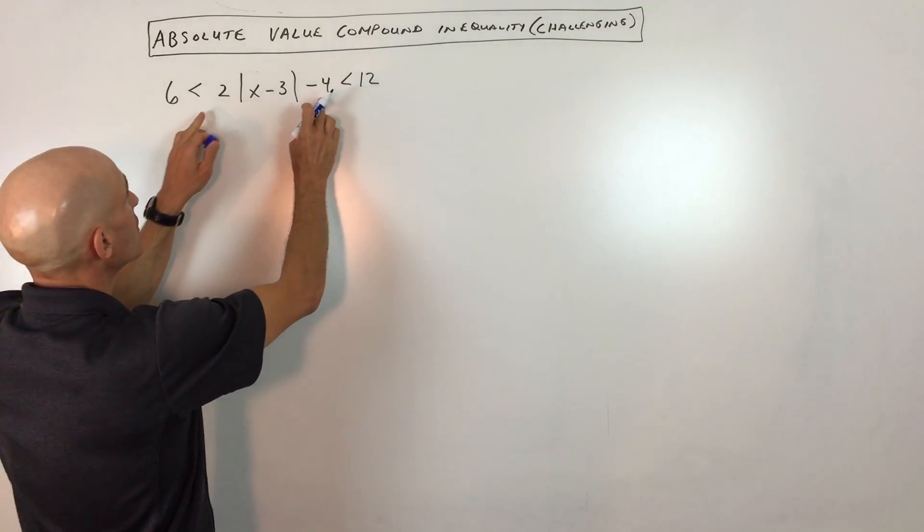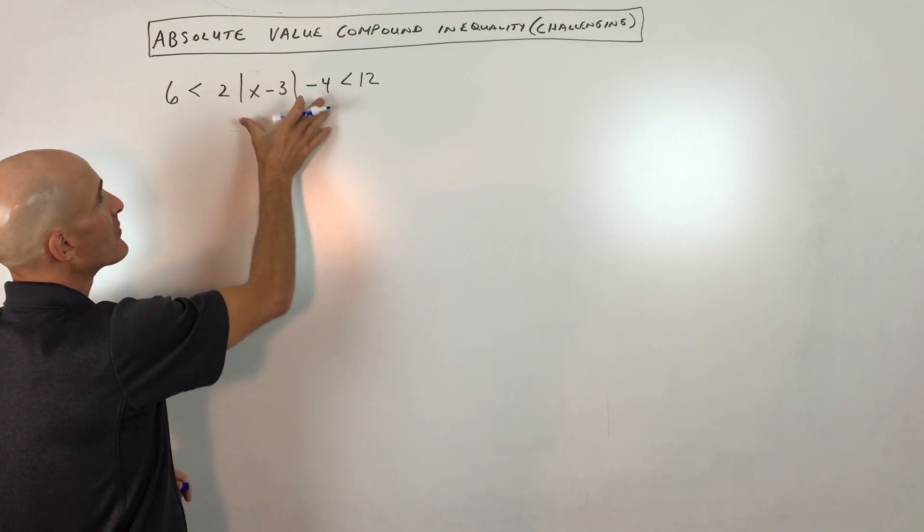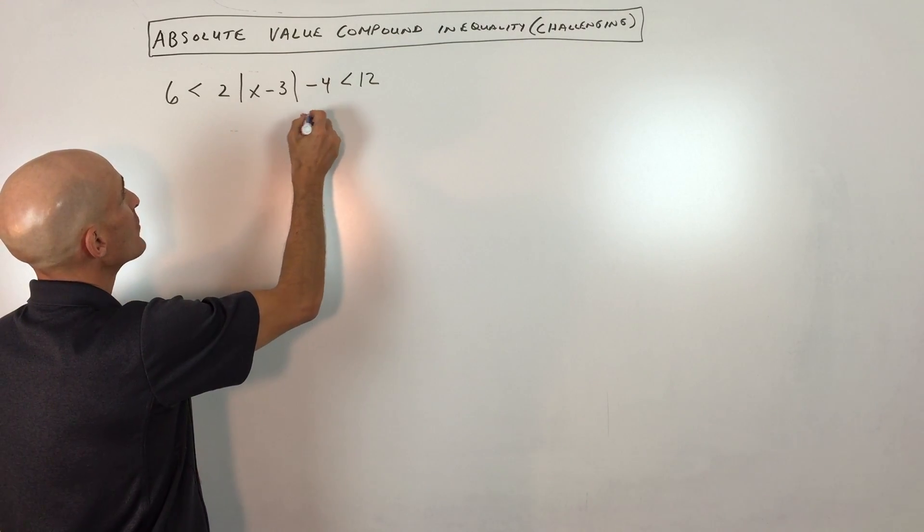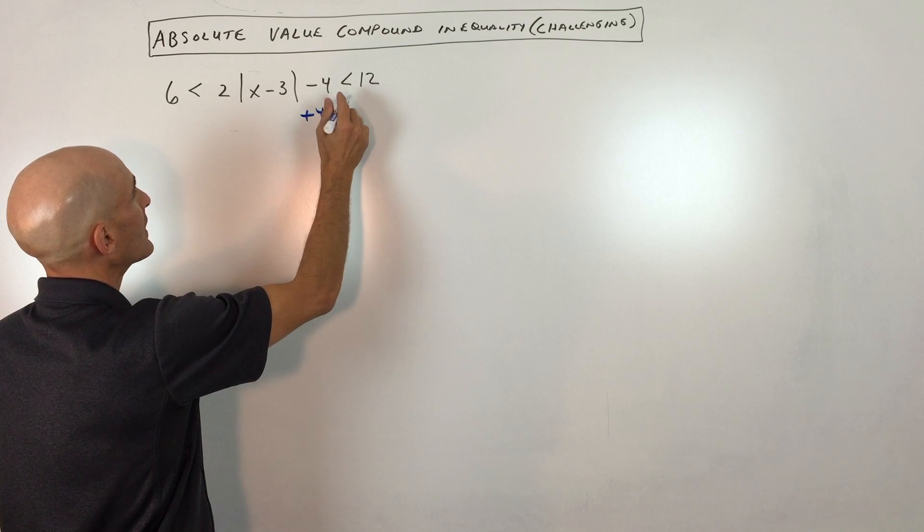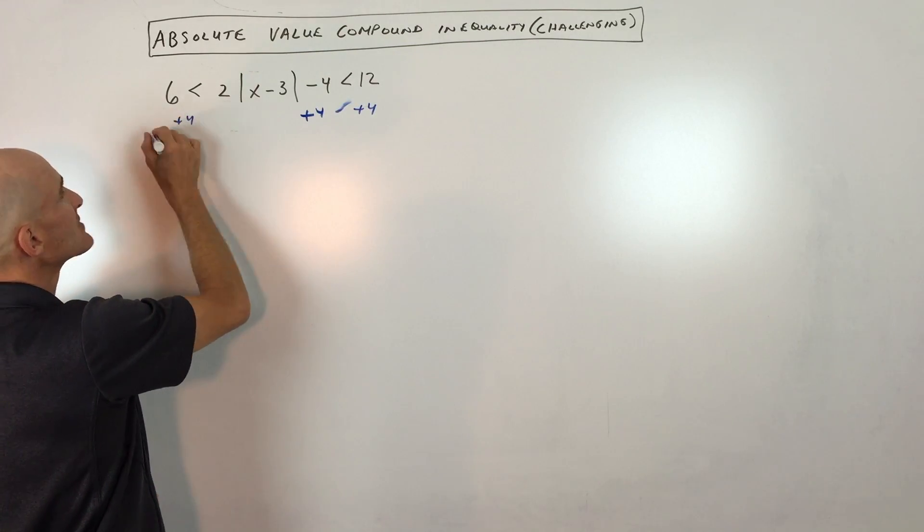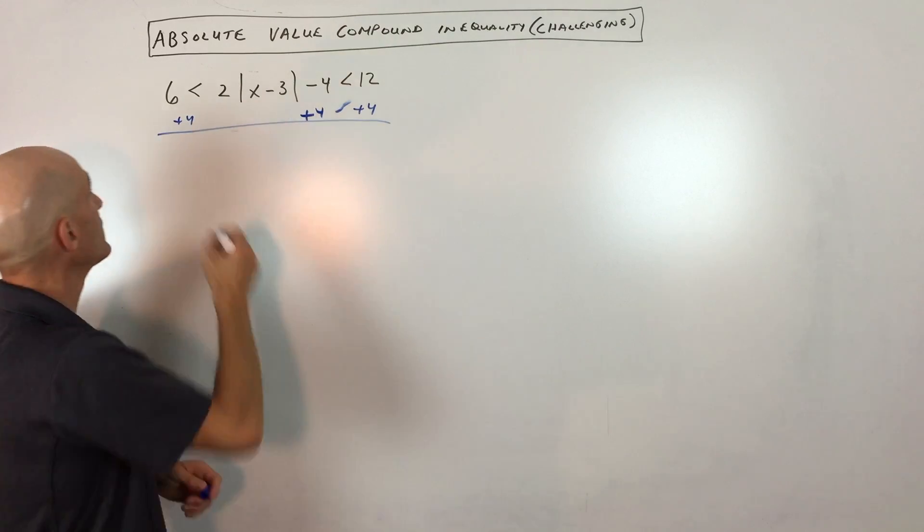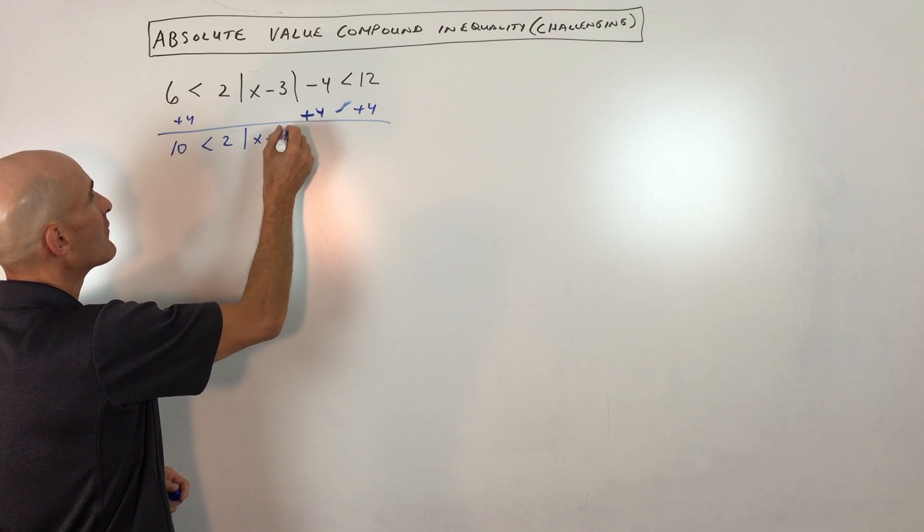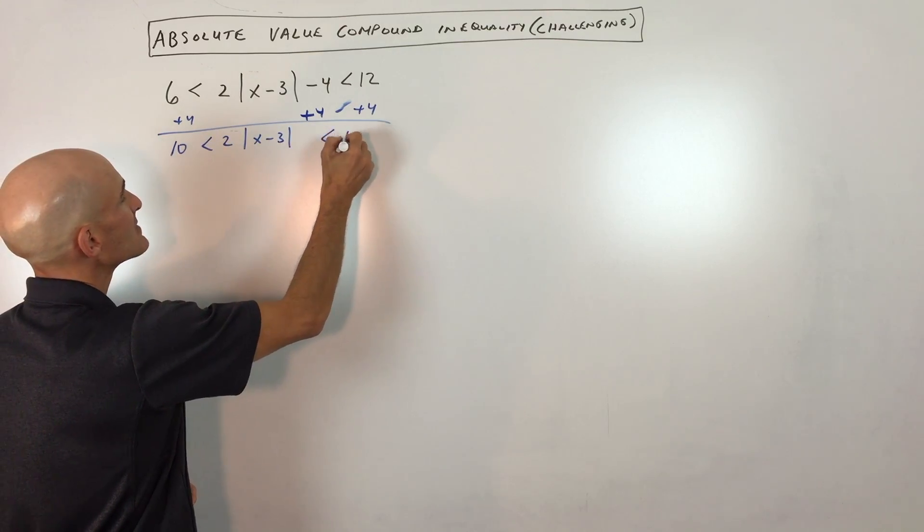Here's how you would approach this problem. First thing is you want to work towards the variable from the outside in. So we're trying to get this variable by itself. So the first thing I would do is I would add 4 to the middle, the right, and the left side of the inequality. So that gives us 10 is less than 2 times the absolute value of x minus 3 is less than 16.